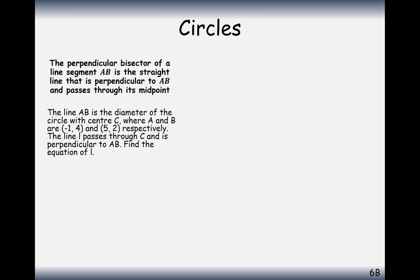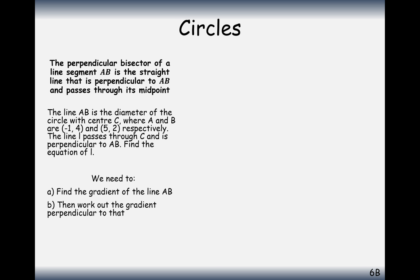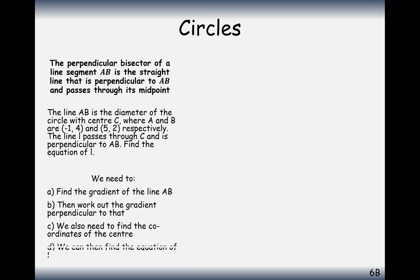The line AB is the diameter across a circle C. Find the line L which passes through C and is perpendicular to AB — find the equation of L. We need to first find the gradient of A to B, then flip the gradient round so it's the perpendicular gradient. We also need to find the centre coordinate so the line can go through it, then link the equation of the line and its gradient to that coordinate.